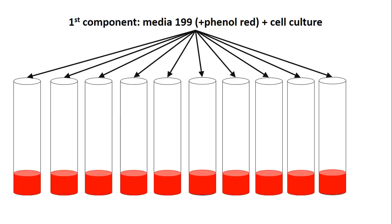For this reaction, we take nine tubes and add cell culture in media 199 consisting of phenol red.